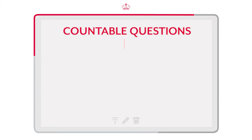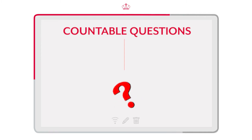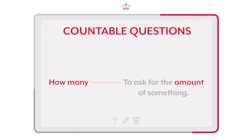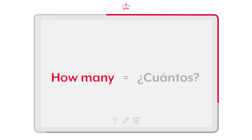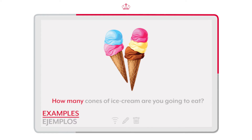Before we end with the countable nouns, let's see how to use them in questions. We use 'how many' to ask for the amount of something. Para las preguntas, debemos usar 'how many' para preguntar por la cantidad de un sustantivo. Su significado: cuántos. For example, how many cones of ice cream are you going to eat?